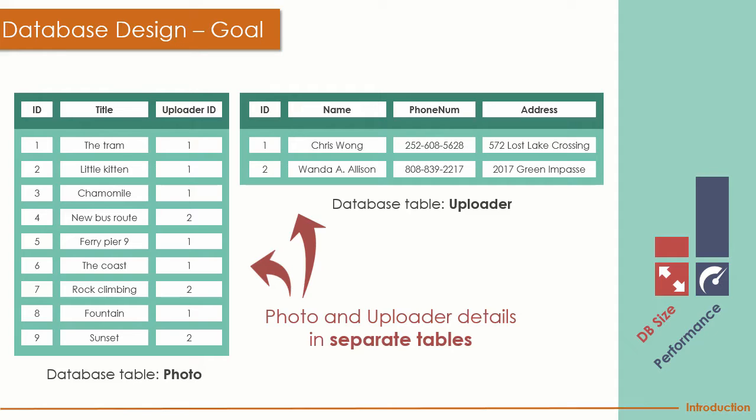The idea is to spread the photo and upload data into two tables. The photo table saves photo information, and the uploader table saves upload information. The benefit is reduced redundant data, and when you update uploader information you don't need to update many rows in the database.